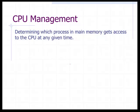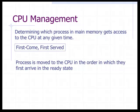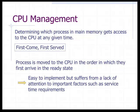CPU management determines which process gets access to the CPU at any given time. The first strategy is first come, first serve — whoever arrives first gets served first. It's simple and easy to implement, but it lacks consideration for important factors like service times or priority. For example, in an emergency room, someone having a heart attack should get access before someone who only cut their finger, even if they arrived later.